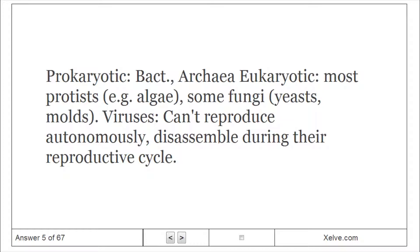Eukaryotic microbes include most protists, such as algae, some fungi, yeasts, and molds. Viruses cannot reproduce autonomously and are disassembled during their reproductive cycle.